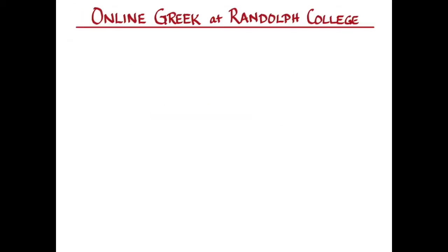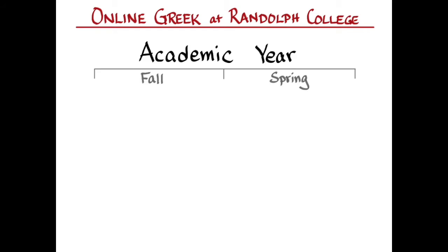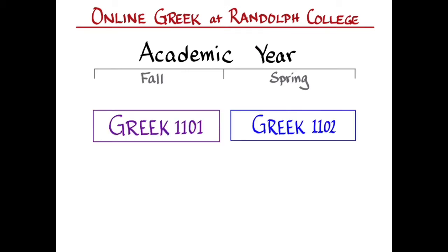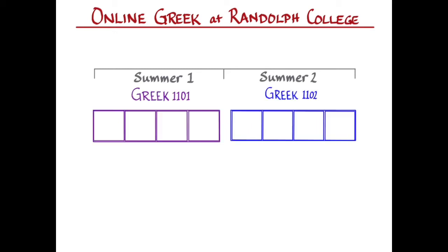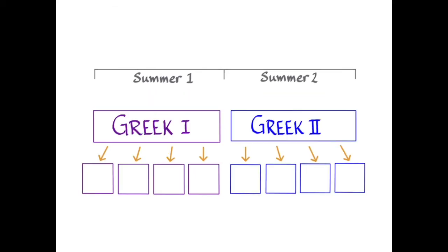The usual way that we think about beginning Greek in most American institutions is as something that covers a whole academic year. As we have for several summers, we'll offer those two four-credit courses in two five-week summer sessions again this summer. But now we're thinking of those two four-credit courses as eight sequential modules and we're dividing those up into separate courses that you can take in any term.